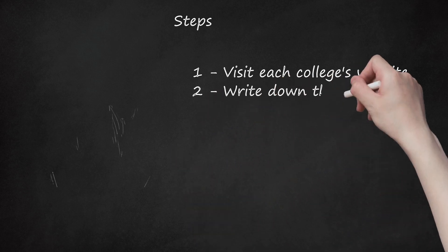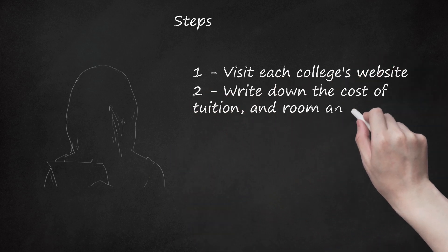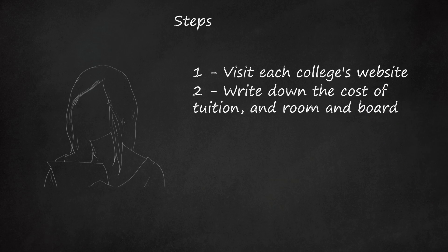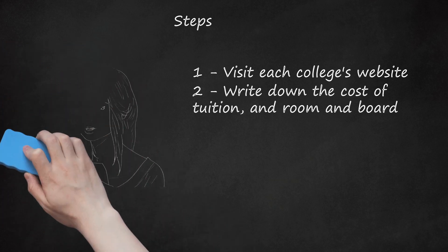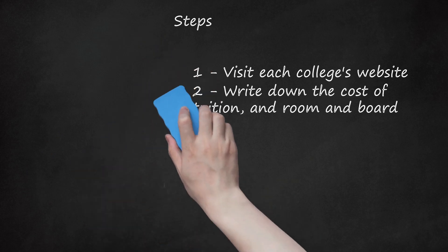2. Write down the cost of tuition, and room, and board. All of these are important to know in order to understand the total cost of each college. The tuition includes the cost of classes while room and board will include the cost of housing and food. Many colleges will require you to have a meal plan for the on-campus cafeterias while you are living on campus. If you decide to live at home, do not include room and board in your total cost for the college.